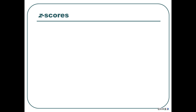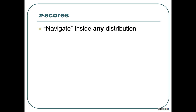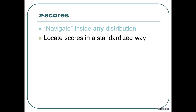A Z-score lets you navigate inside any distribution. It lets you find, if somebody gives you a score, you can say this score is such and such distance from the mean, taking into account the variability. So you can locate scores in a standardized way.